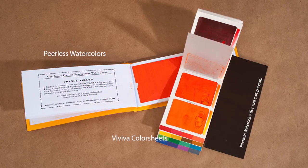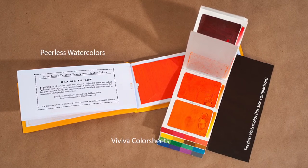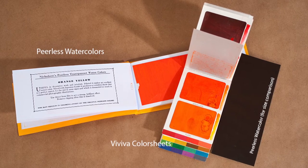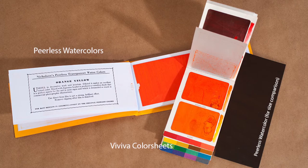Viviva Color Sheets and Peerless Watercolors are basically paper-like substrate sheets saturated with highly pigmented dyes. Only a small amount of water is necessary to activate them. To use them, you just touch a wet brush to the surface and you're ready to paint.